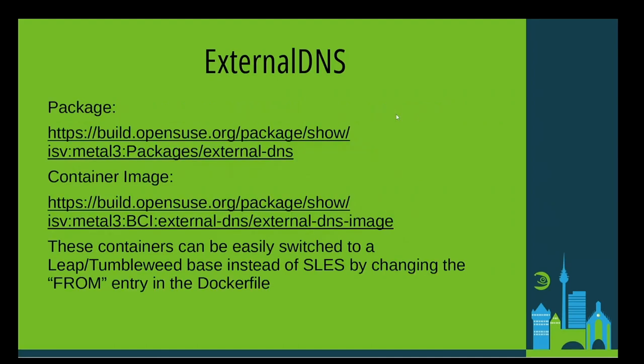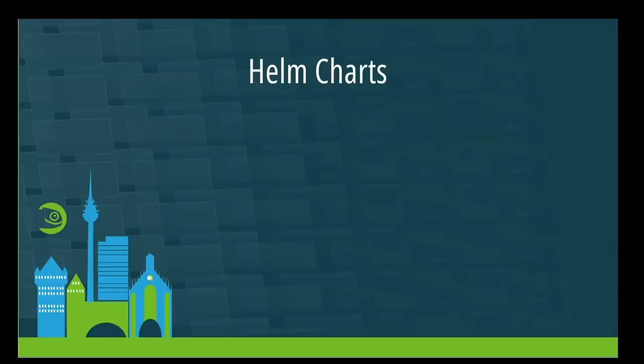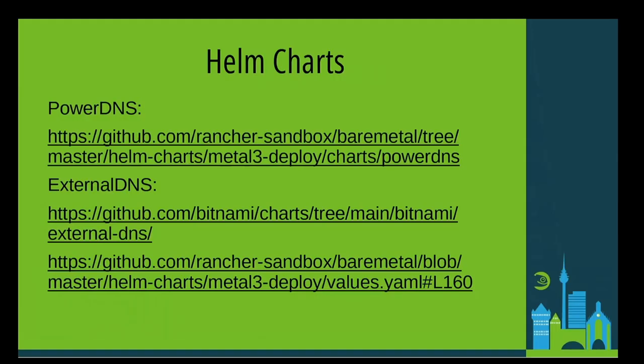The external DNS package and a corresponding container image are now published under the ISV Metal3 project. These images are based on SLE but can easily be changed to a Leap or Tumbleweed base by changing the FROM entry in the Dockerfile. The Rancher Bare Metal project has an example of the Helm charts used to deploy PowerDNS. For external DNS, the Bitnami chart was used but the Alpine image was replaced by the SLE OpenSUSE external DNS image.